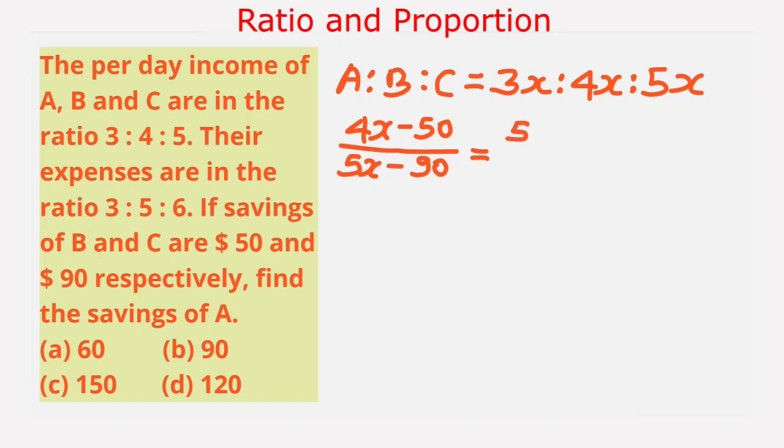So we write 5/6, and from cross multiplication we get 5(5x) = 25x minus 5(90) = 450, equals 6(4x) = 24x minus 6(50) = 300. Then 25x minus 24x equals x equals 450 minus 300 equals 150.